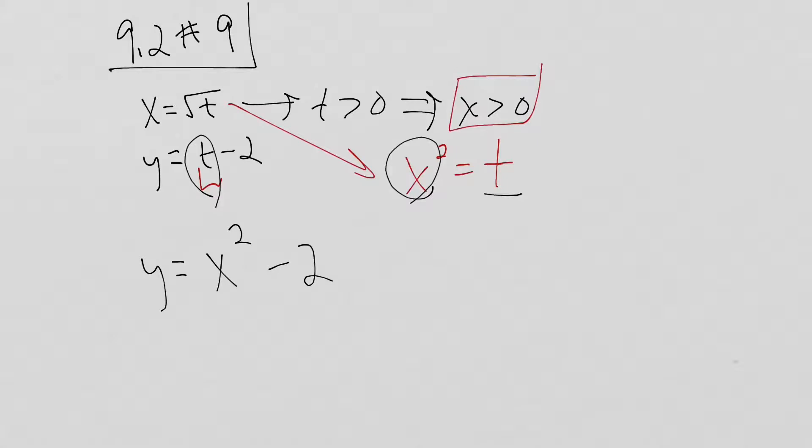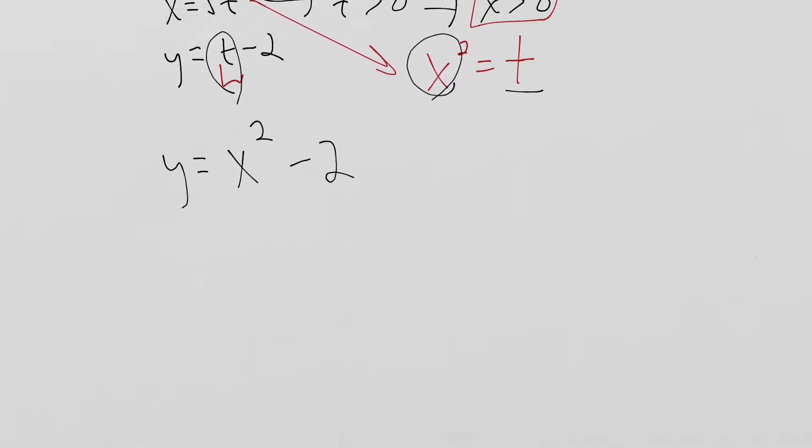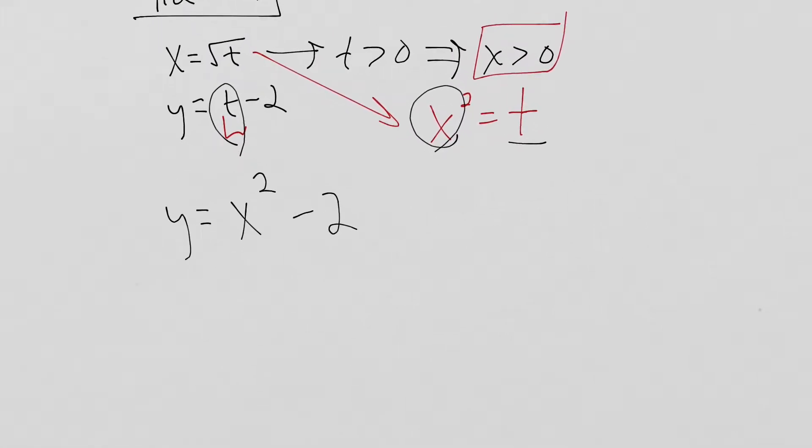From there, you all should be able to graph x squared minus 2. Go like that. I think the mistake here is to go 1, 2. It's going to pass through here. And draw the parabola like that.